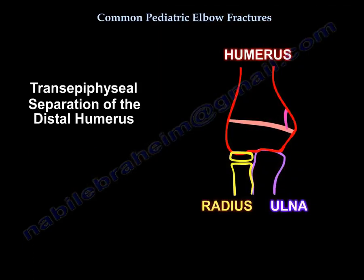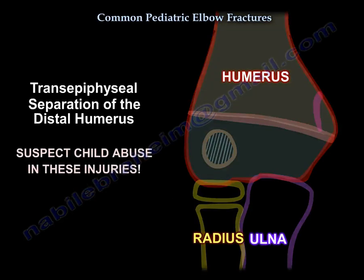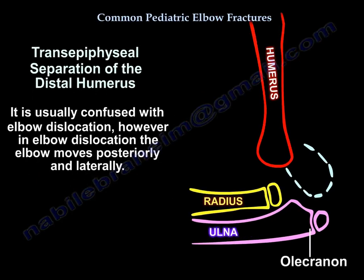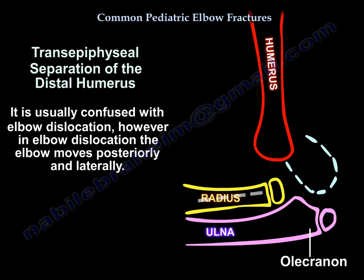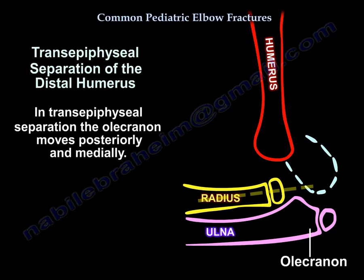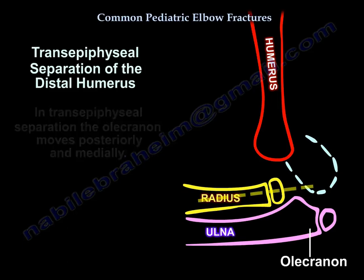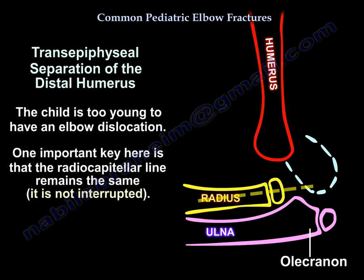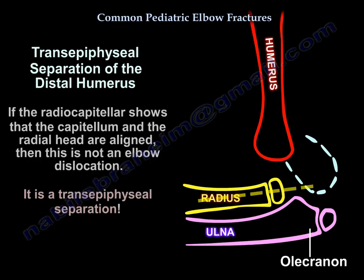Trans-epiphyseal separation of the distal humerus: you have to suspect child abuse with this injury. It is usually confused with elbow dislocation. However, in elbow dislocation the olecranon moves posteriorly and laterally, whereas in trans-epiphyseal separation the olecranon moves posteriorly and medially. The child is too young to have an elbow dislocation. The radiocapitellar line remains intact — if it shows the capitellum and radial head are aligned, this is not an elbow dislocation but a trans-epiphyseal separation.